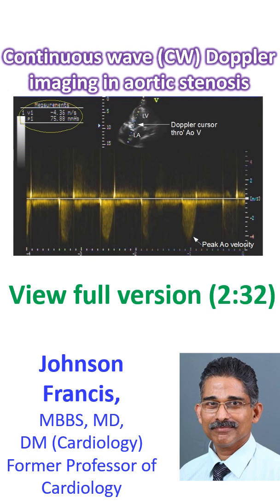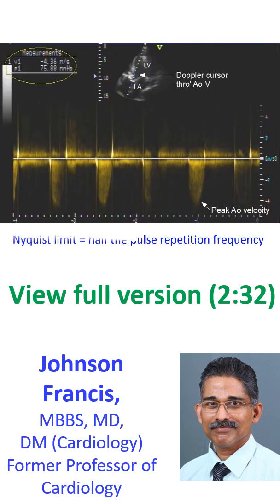Aliasing velocity is the maximum velocity which can be imaged by a given Doppler frequency and is dependent on the pulse repetition frequency. The highest velocity that can be detected is known as the Nyquist limit, which is equal to half the pulse repetition frequency.